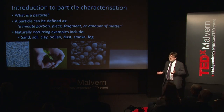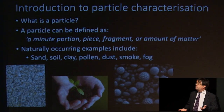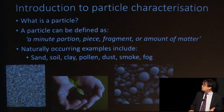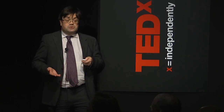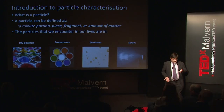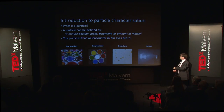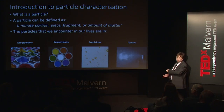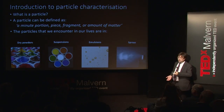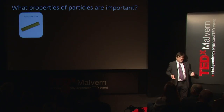To start with, we're going to be talking about particles. What is a particle? It's really a tiny piece of matter. Naturally occurring particles include sand, soils, clay, pollen, dust, smoke, and fog. Of course, a lot of people make them as well. We encounter particles in dry powders like salt, sugar, and flour; suspensions, which are particles in a liquid; paints; inks; emulsions like milk and yogurt; and sprays like deodorants and asthma inhalers.